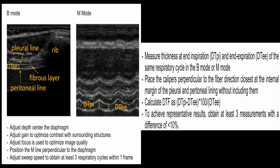Measure the thickness of the diaphragm at end inspiration and end expiration within the same respiratory cycle. Place the calipers perpendicular to the fibers at the internal margin of the pleural and peritoneal lining without including them — include only the muscle, not the pleural lines, as shown here.